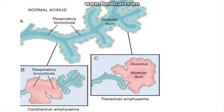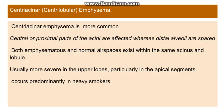Centriacinar emphysema is the most common type. The central or proximal part of the acinus is involved, whereas the distal alveoli are spared. Therefore, both emphysematous and normal air spaces exist within the same acinus or lobule. It is most severe in the upper lobes of the lung and apical segments, and is predominantly seen in heavy smokers.